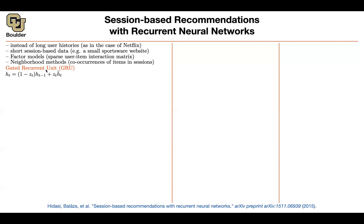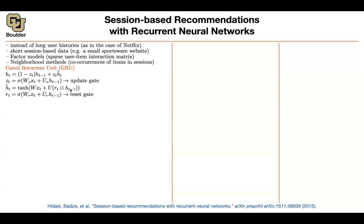A quick recap of recurrent neural networks: you have a history, and you are going to be updating some of that history using new information. The new information is the new item that the user clicked on — this is an integer or one-hot encoded. You are going to reset some portion of your hidden unit. So there's a reset gate and an update gate. There is no forget gate for GRUs — the forget is one minus the update.